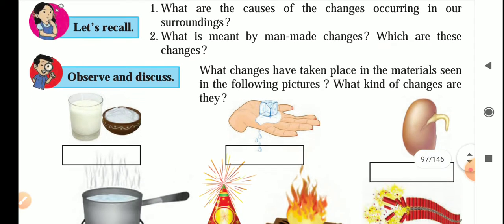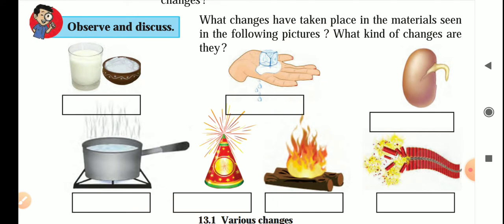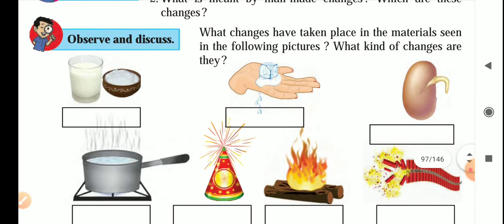A few of these changes are shown in the images. In the first image you can see one glass full of milk and in an earthen pot there is powdered sugar. If you add this sugar to milk it will dissolve easily. In the second image there is one ice cube which is melting slowly because of the heat present in its surrounding environment.